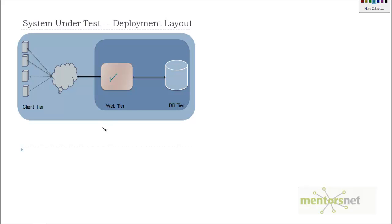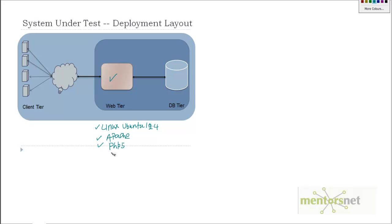we need to install an operating system, and that operating system is Linux Ubuntu 12.4. That's the first requirement. The second requirement is, once we have installed Linux Ubuntu 12.4, we are going to install Apache web server and download the Apache software from the Apache Foundation and install it on this machine. We also need to enable PHP5 to run in this Apache web server.